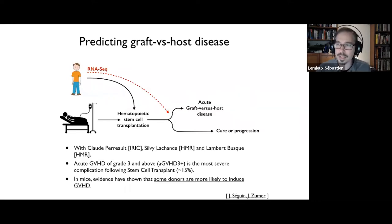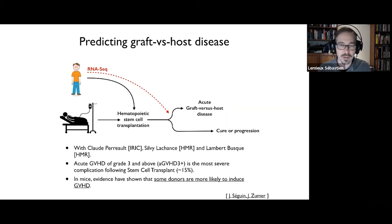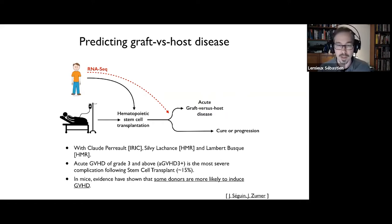So in the first part, this is a project we have with clinicians at HMR — Sylvie Lachance, Landerbusk, and Claude Perrault — and we started it quite a few years ago. The idea is to make a predictor to predict what we call graft-versus-host disease. Whenever someone has cancer, one possible treatment is a hematopoietic stem cell transplantation, where you take the immune system of a donor and transfer it to the cancer patient with the hope that the immune system will eradicate the cancer. The danger of this is graft-versus-host disease, where the transplanted immune system actually turns against the patient. This is a very dangerous condition that happens in maybe 15% of transplantations. The idea of this project was to use RNA-seq on donor cells to predict whether there will be a GVHD.